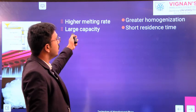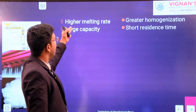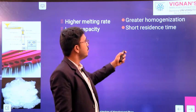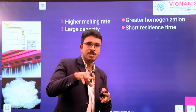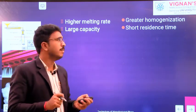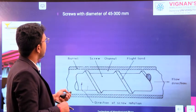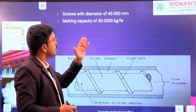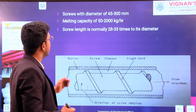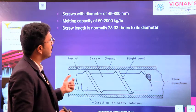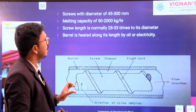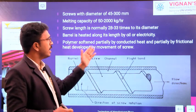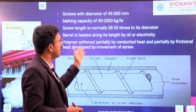The advantages of using a screw extruder are: higher melting rate — fast and large capacity — greater homogenization, and short residence time, meaning the presence of polymer inside the extruder is very short. The screw diameter is 45 to 300 mm, melting capacity is 50 to 2000 kg per hour, and screw length is normally 28 to 33 times its diameter. The barrel is heated along its length by oil or electricity. Polymers soften partially by conducted heat and partially by frictional heat developed by movement of the screw.